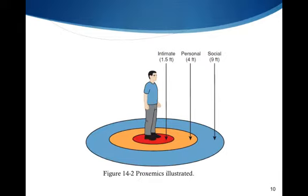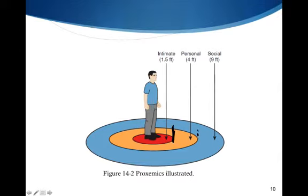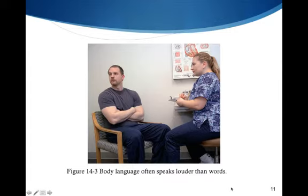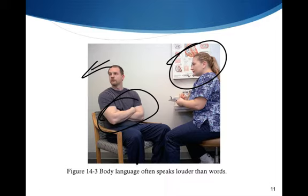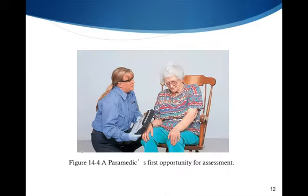This is Proximics Illustrated, figure 14.2 in your book. Intimate space is shown in red, personal space extends out to four feet, and then social space beyond that. Body language often speaks louder than words — for example, a person who is closed in and turning away from the caregiver is not exactly open to answering questions. The paramedic's first opportunity for assessment is in the initial interview and through direct communication.